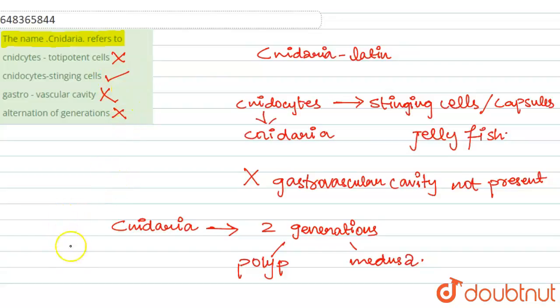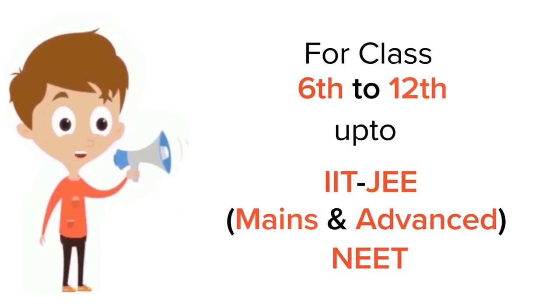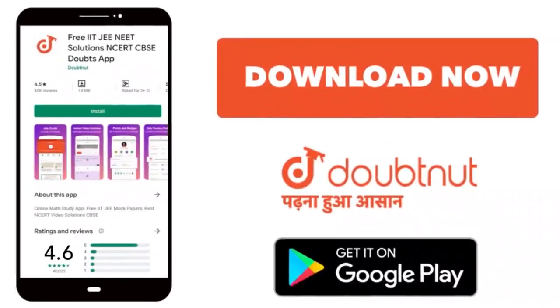So our correct option will be option number B. Cnido-sites referred to as stinging cells. Thank you everyone. For class 6 to 12th, IIT-JEE and NEET level, trusted by more than 5 crore students. Download Doubtnut app today.